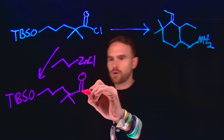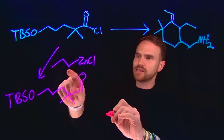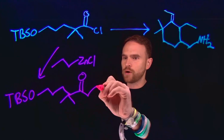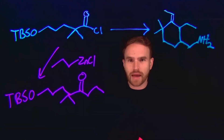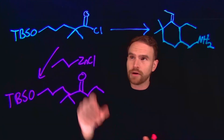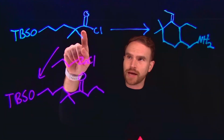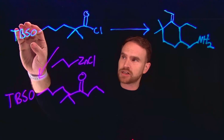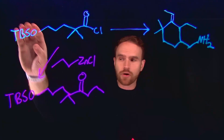And leave everything else the same. Now all that's going to be added is this 1, 2, 3-member carbon chain. And then from here, now that we've done this reaction, because we couldn't have done this reaction in the presence of an alcohol, we can go ahead and remove this protected group.